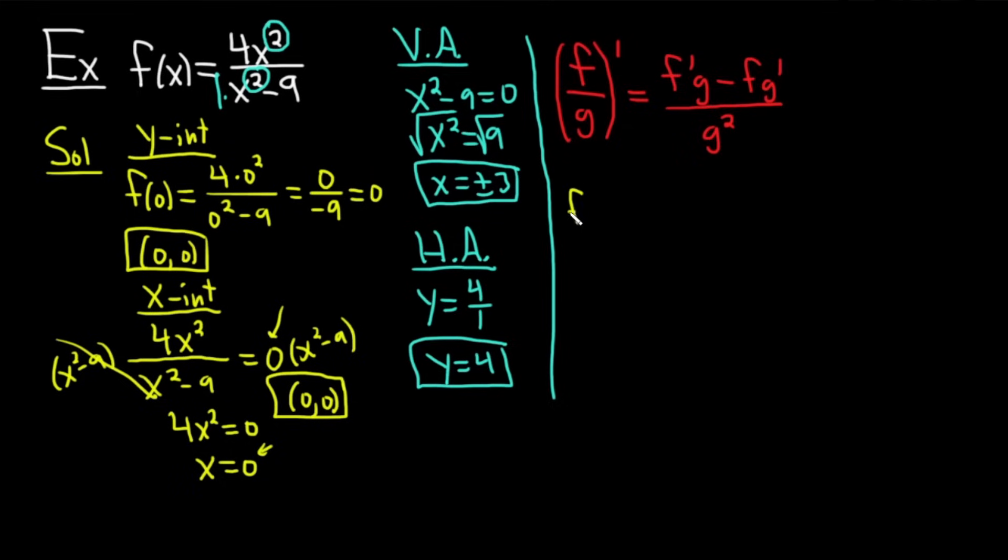So we have f'(x). It's the derivative of the top function, which is 8x via the power rule, times the bottom, x² - 9, minus the top, 4x², times the derivative of the bottom, 2x, all divided by the bottom squared. You become a master at the quotient rule by doing exercises involving curve sketching, because a whole lot of them require the quotient rule. Let's double check it really quickly. Derivative of the top is 8x times the bottom, x² - 9, minus the top, 4x², times the derivative of the bottom, 2x, over the bottom squared. All is good.